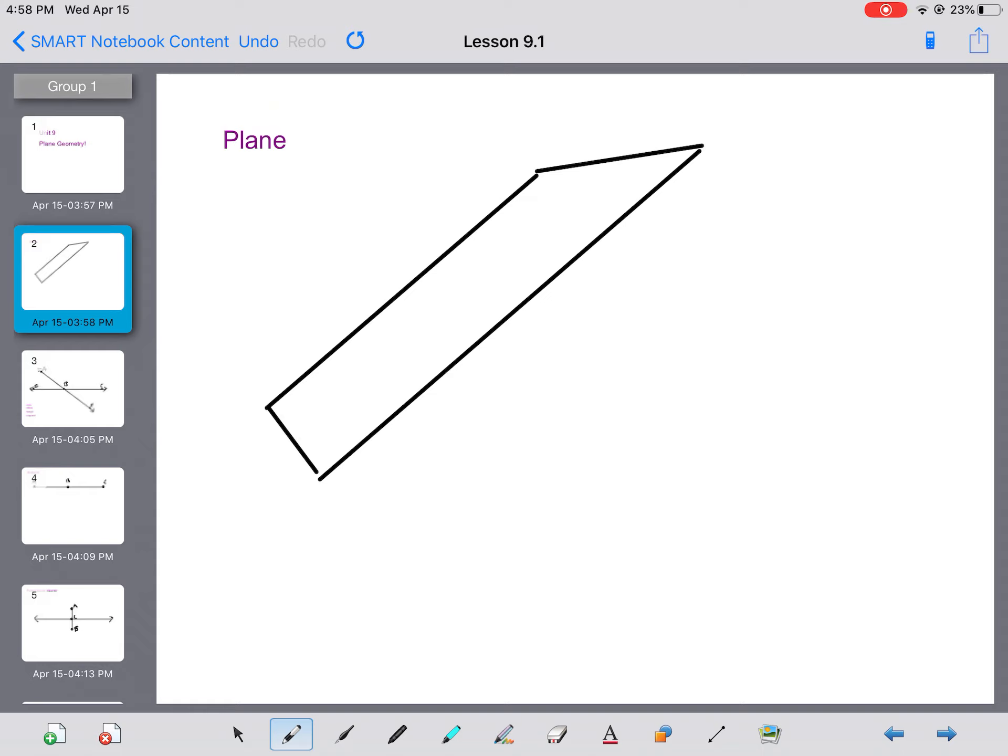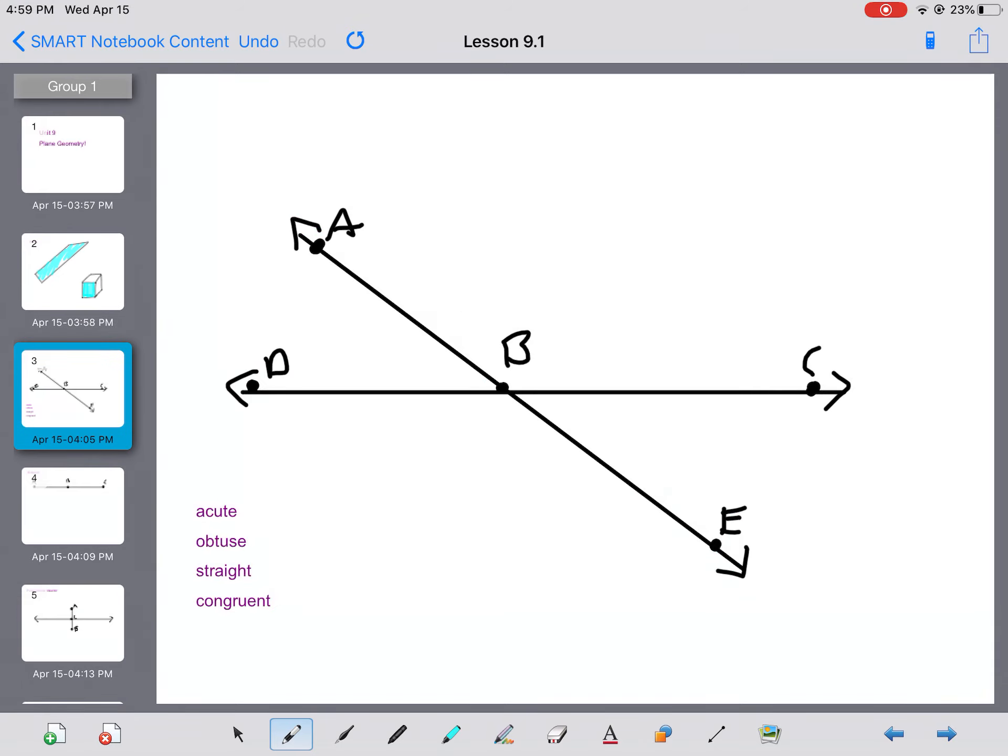First thing I want to talk about is what is a plane. Well a plane is a two-dimensional surface. So you can think of this that I have right here as a plane. It's a flat 2D surface. You could think of a sheet of paper as a plane. You could think of the top of your kitchen table as a plane. Basically think of anything that is flat. If you think about a cardboard box, that is not a plane. It has a plane on it. This area would be a plane, but the whole thing is 3D. We're just talking about one flat surface. So when we talk about plane geometry, we're just talking about geometry working on flat surfaces.